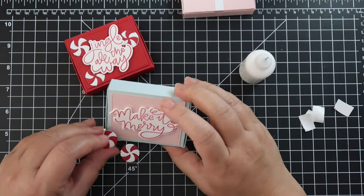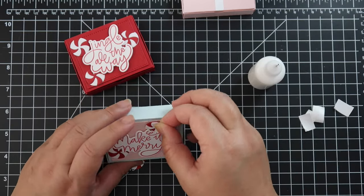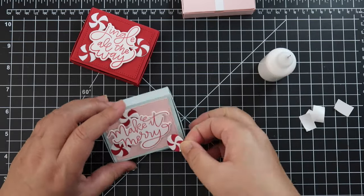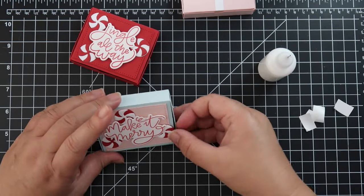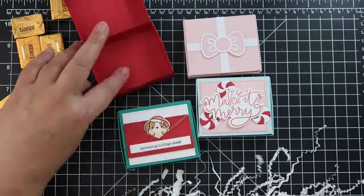So for these two are just super simple but I just love the way the sentiment fills the top of the box nicely and then when you pop it up you can tuck those little peppermint pieces behind it for more decoration.